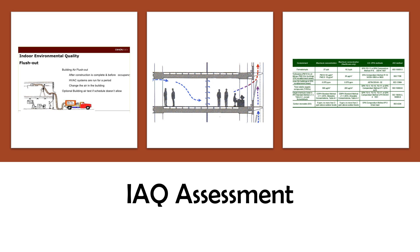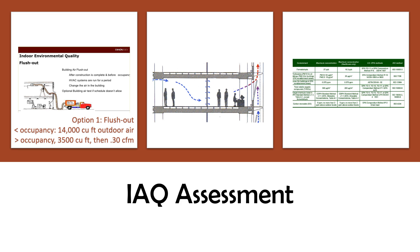You perform a building flush out with 14,000 cubic feet of outdoor air per square foot gross floor area. Path two is done during occupancy. If the occupants want to move in before the flush out has been completed, you can deliver 3,500 cubic feet of outdoor air per square foot before the building is occupied. And then after the building is occupied, it must be ventilated at 0.30 cubic feet per minute (CFM).